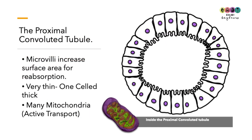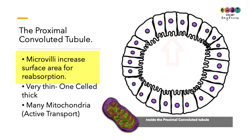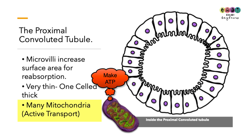Looking inside the proximal convoluted tubule, its walls are one cell thick and lined with microvilli — forming a brush border — which increases surface area, making it very well suited to reabsorption. The cells also contain lots of mitochondria to facilitate the active transport required.